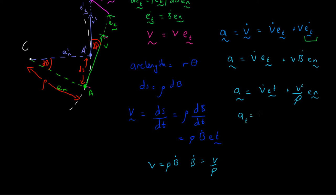So we can now write that the acceleration in the tangential direction is v dot, and the acceleration in the normal direction is v squared over rho. And so we can say that the magnitude of the acceleration is the square root of tangential acceleration squared plus the normal acceleration squared.